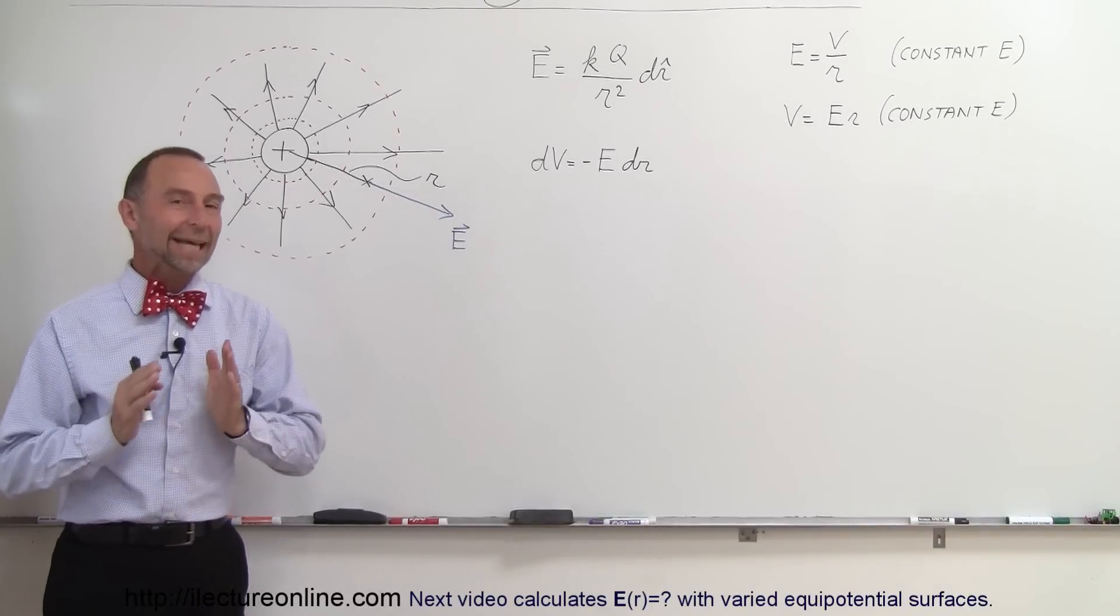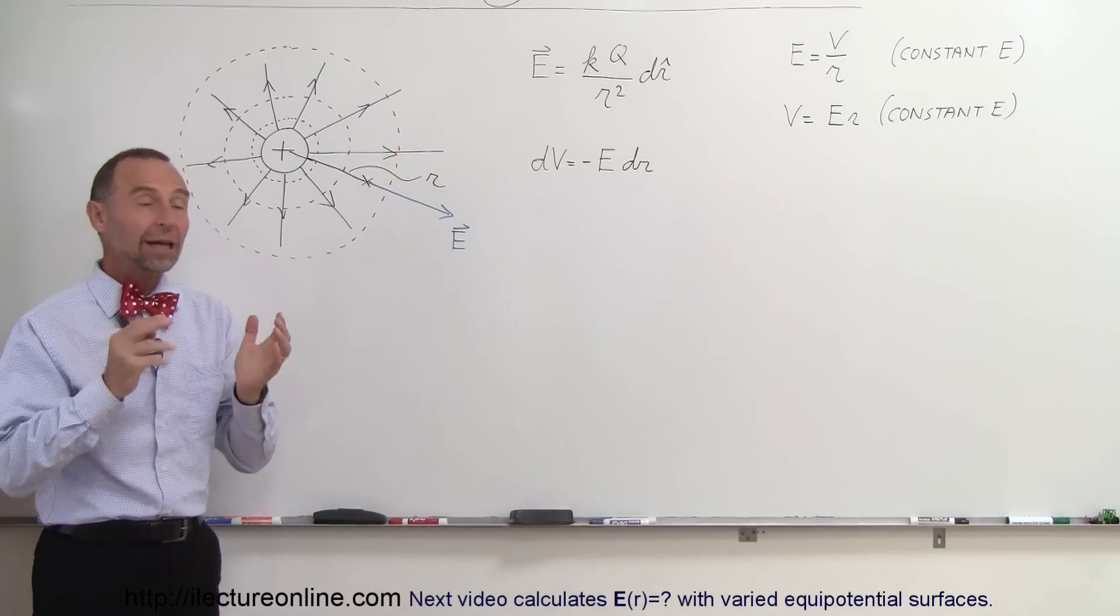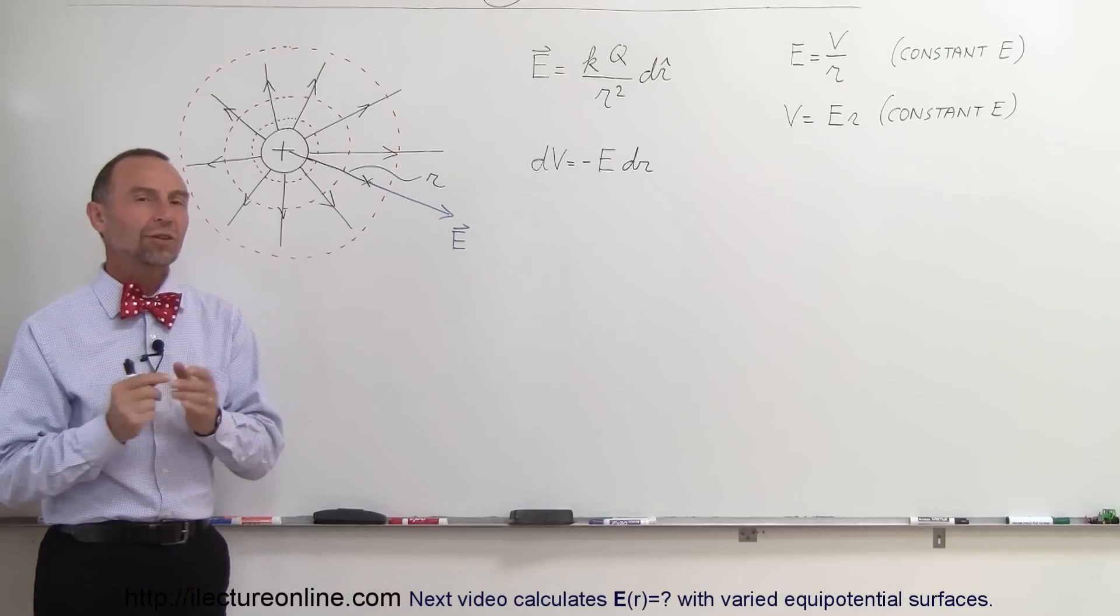Welcome to ElectronLine. In this example we're going to show you what equipotential surfaces look like for a condition where the electric field is not constant.